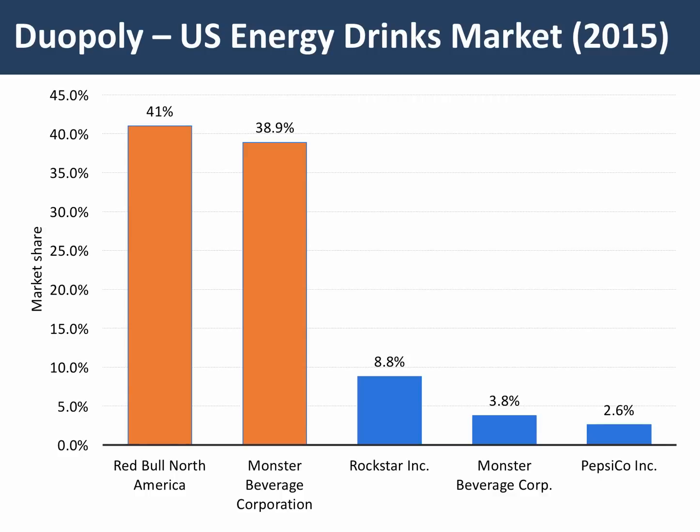Here's a good example of a highly concentrated market — the US energy drinks market. We find this is an oligopoly. Nigh on 80% of the US energy drink sector in 2015 was taken by just two businesses: Red Bull and Monster Beverage. The others were essentially fighting for the minor places.